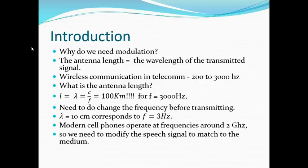For example, if lambda is around 10 cm, it corresponds to a frequency of 3 GHz, and modern cell phones operate at frequencies around 2 GHz. So designing an antenna of length 10 centimeters makes much more sense than designing an antenna of 100 kilometers. That is the reason we need to modify the baseband signal to match the medium so that we can design an antenna of a reasonable size.